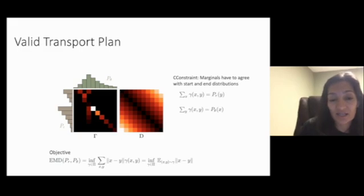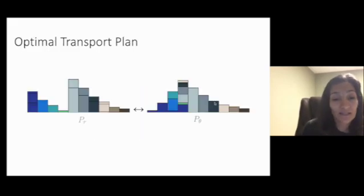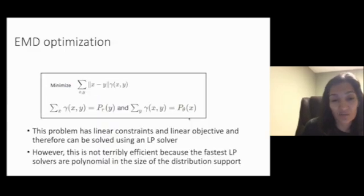So what we want is to minimize this cost subject to the constraint that one of the marginals of this joint distribution is the original one and the other marginal is the final one. So at the end of the day, the transport plan will tell you what you do with the mass in each bin and how you spread it out to bins in the target distribution.